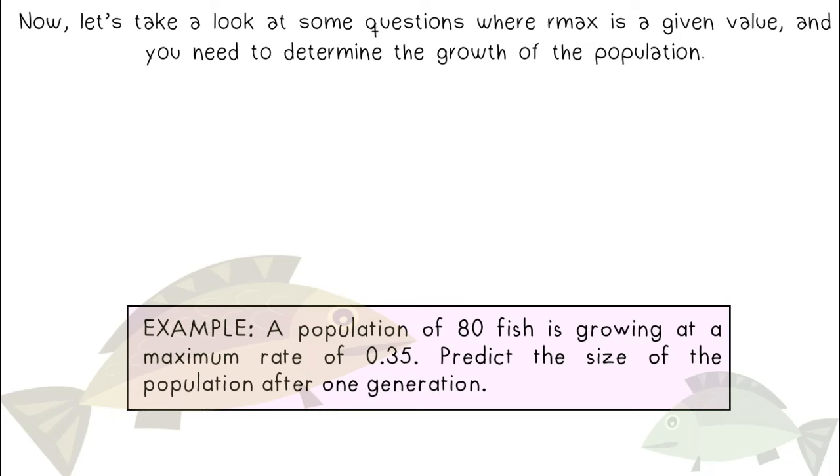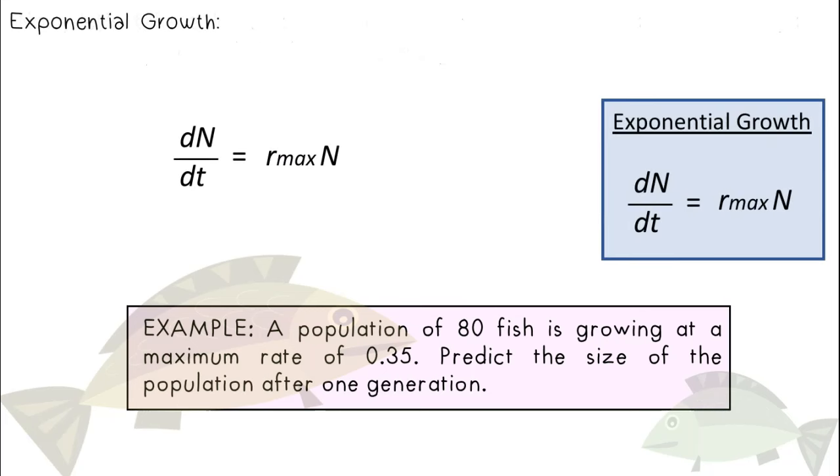Now let's take a look at some questions where rmax is a given value, and you need to determine the growth of the population. A population of 80 fish is growing at a maximum rate of 0.35. Predict the size of the population after one generation. rmax is now a given value. My initial population size is 80. The change in population is 28 fish. But don't forget, to solve this question, we have to predict the size of the population. After one generation, we expect there to be 108 fish.